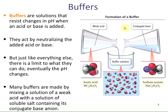In this example of buffer formation, we're combining a weak acid — acetic acid — along with its conjugate base, the acetate ion. We're supplying the acetate ion in the form of sodium acetate. The sodium part, the sodium+, is a neutral cation, and the acetate is the deprotonated form of the acetic acid.